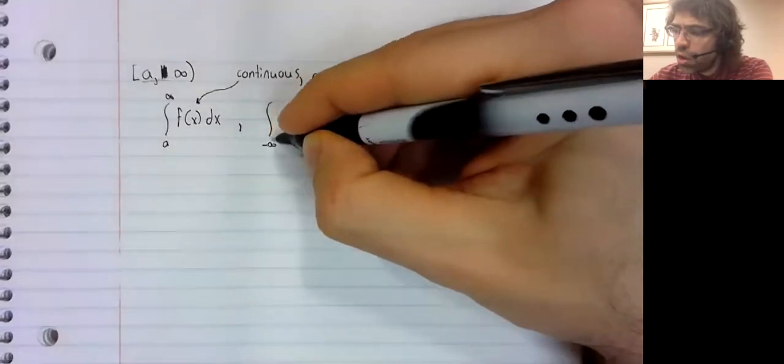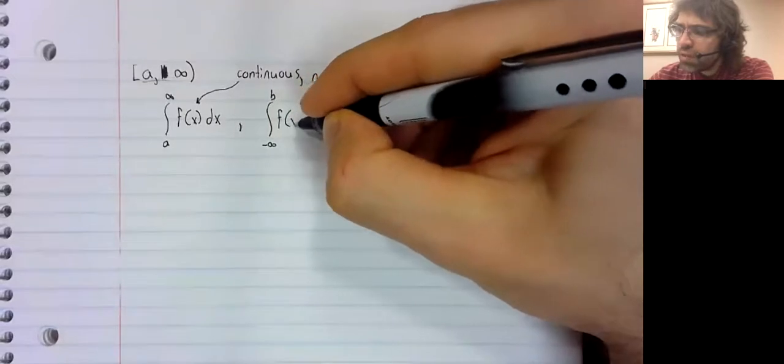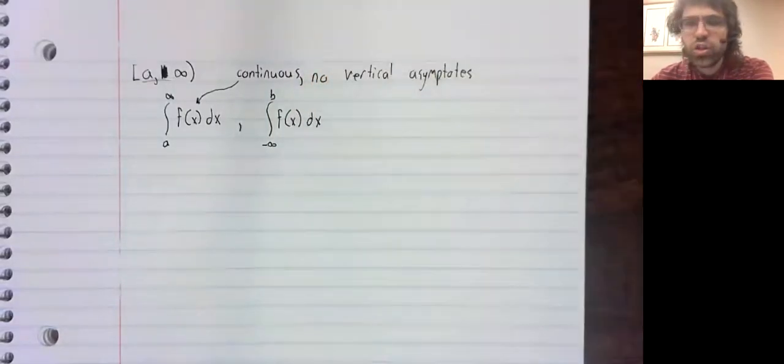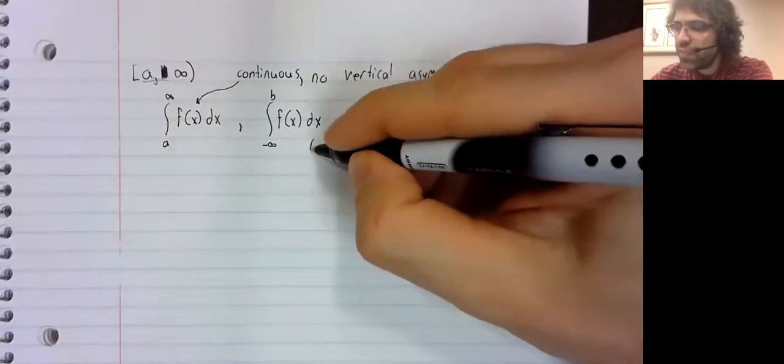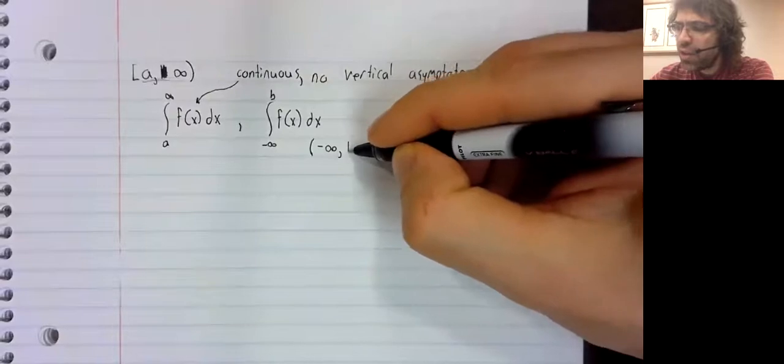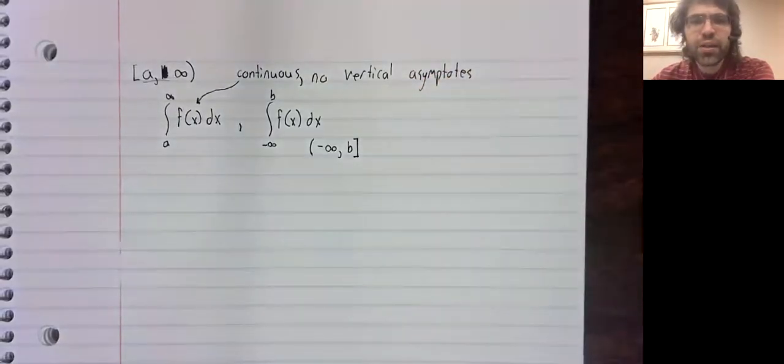We could also integrate from negative infinity to b, if we have a half infinite interval like that.